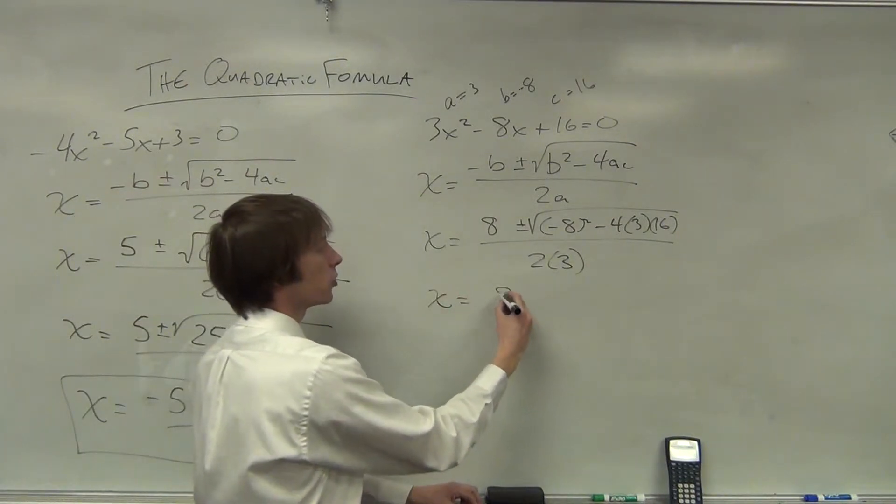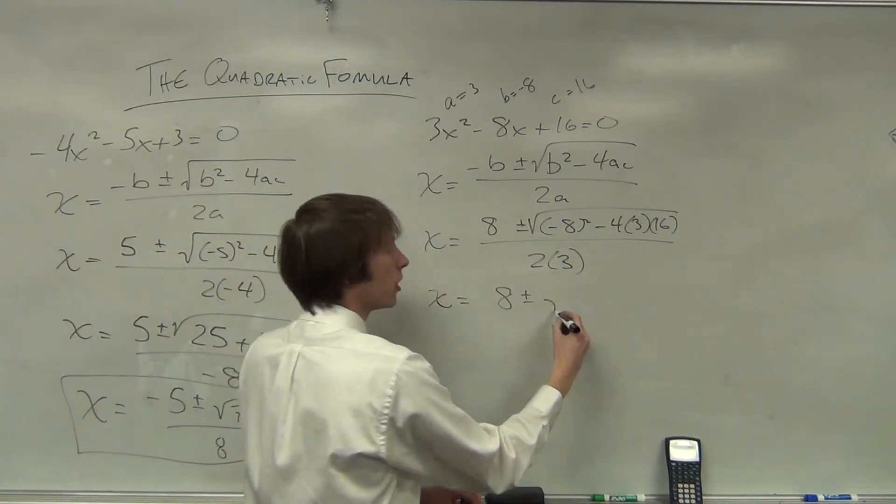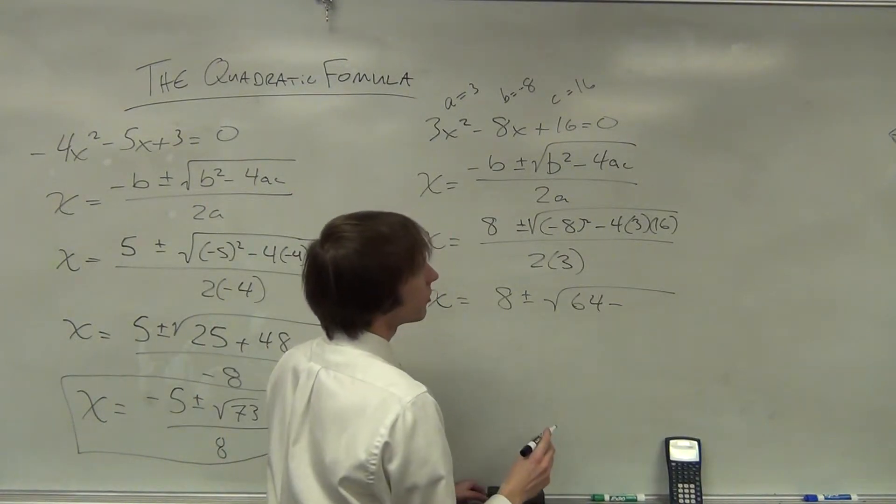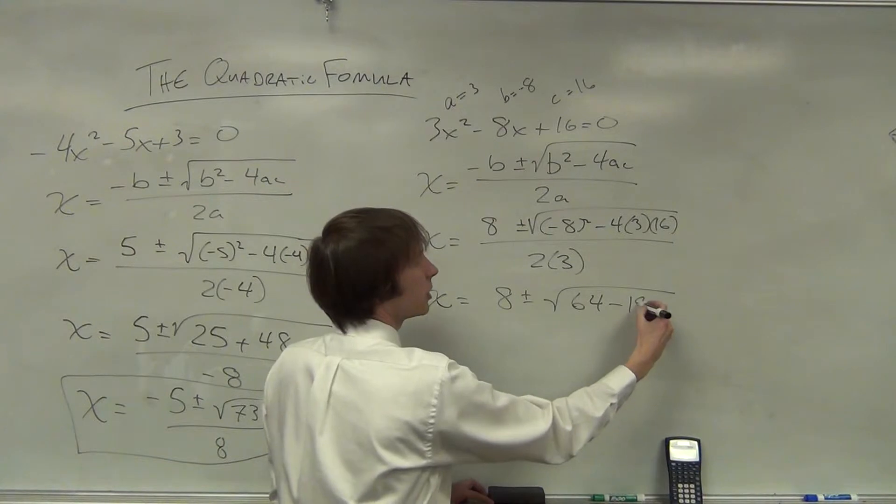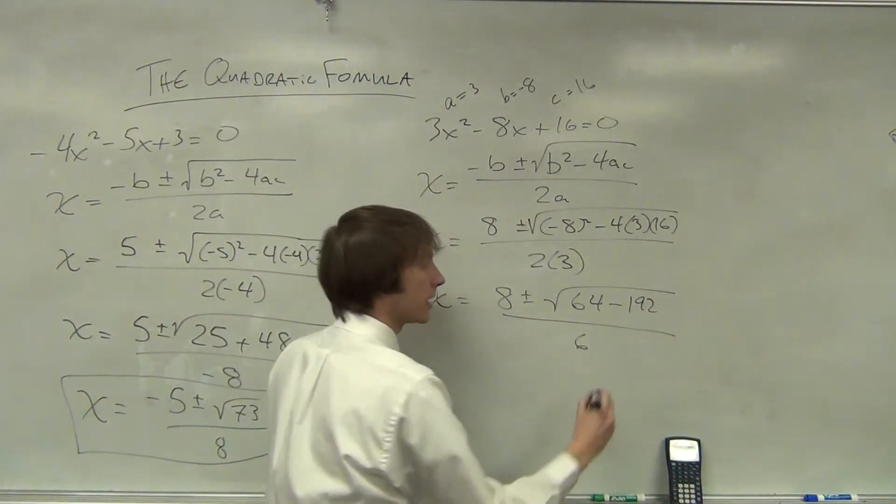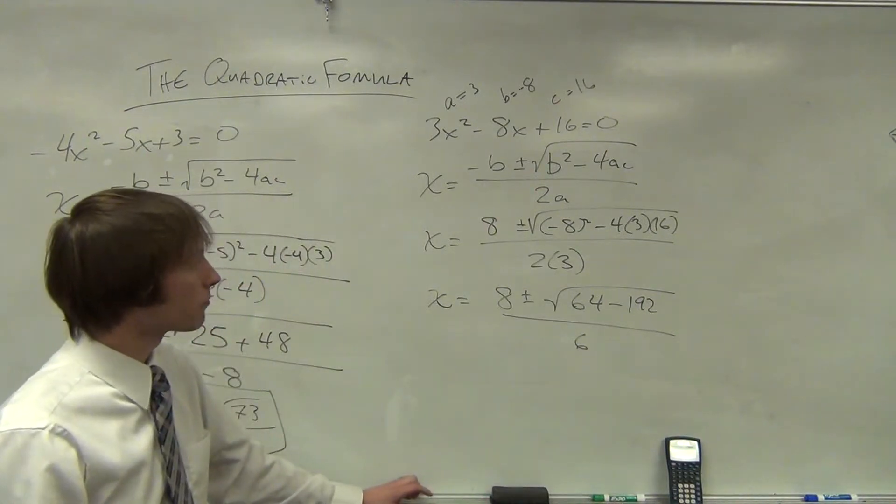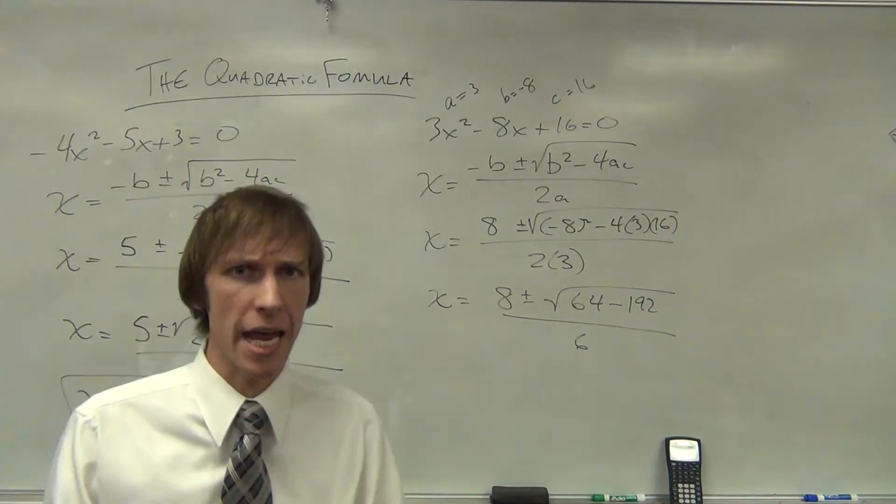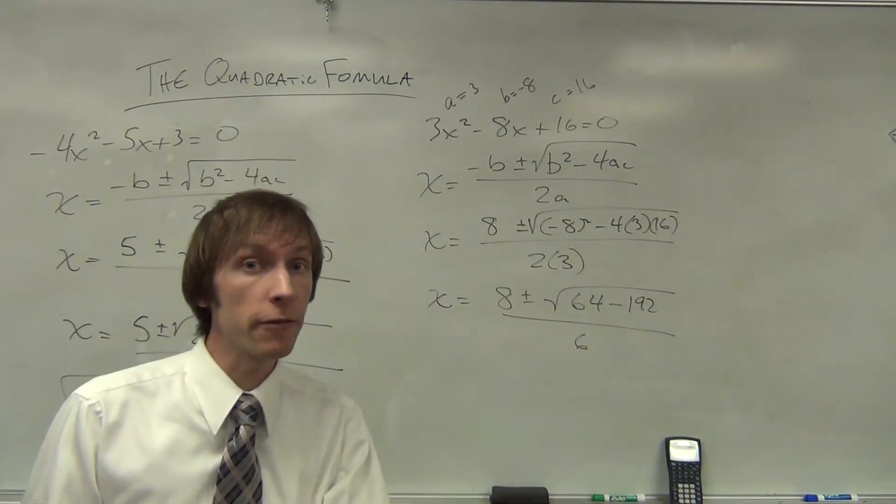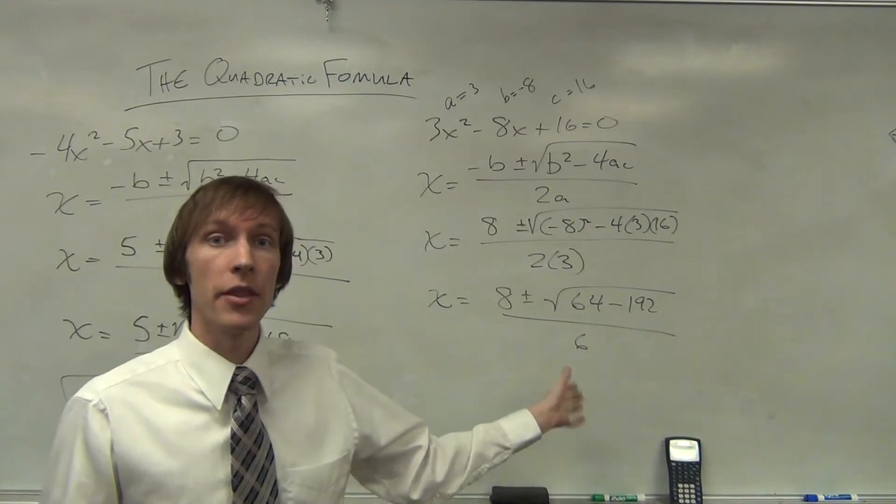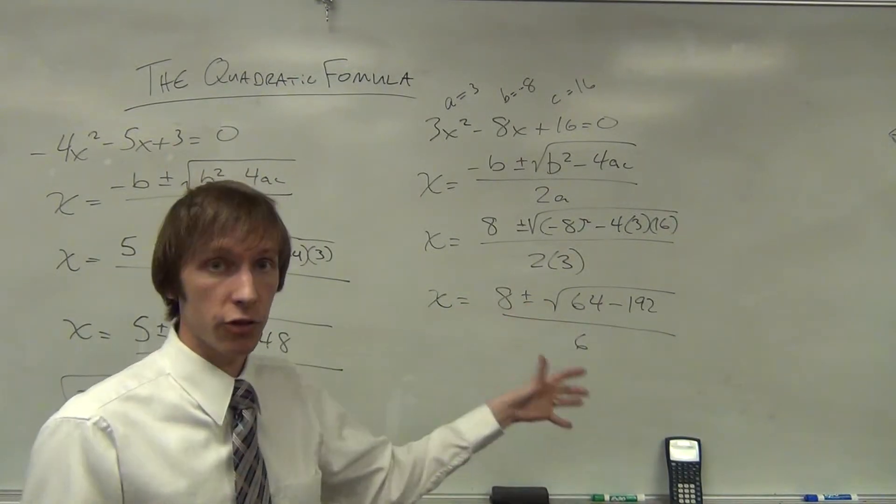So x is equal to 8 plus or minus the square root of 64 minus 12 times 16 is 192, all over 6. Now 64 minus 192 is going to give us a negative number. So if we remember from the last video that when we have a square root of a negative number, that means we're going to end up with complex solutions here.